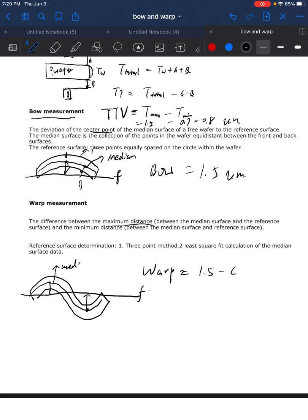And the minimum distance between the median surface and reference, which will be from here to here, this number will be negative 1.5. So we can get the warp as 3 micrometers.